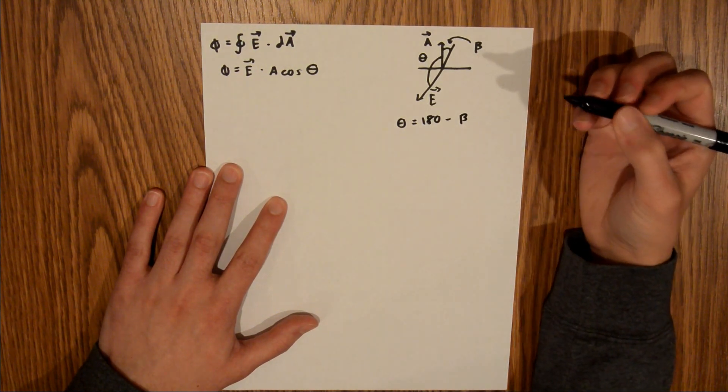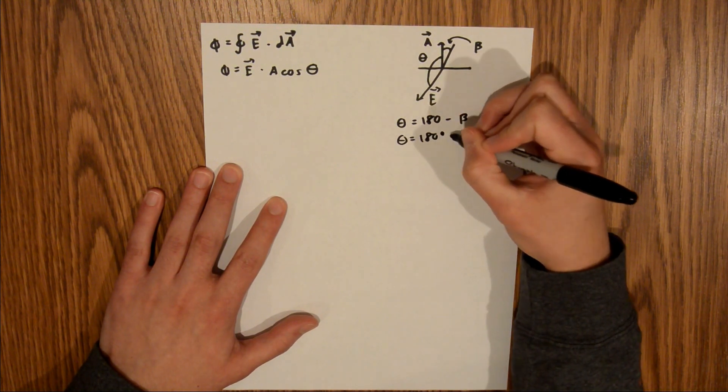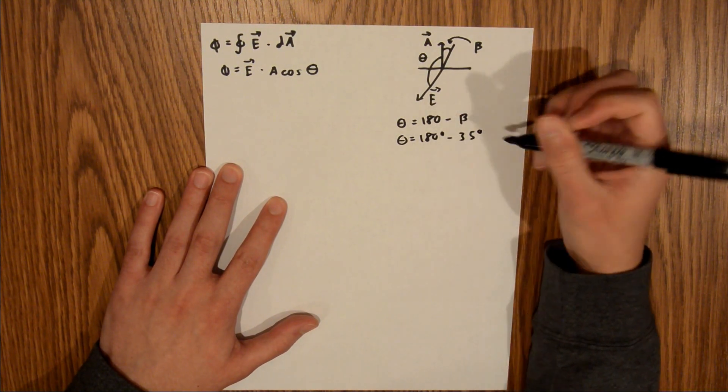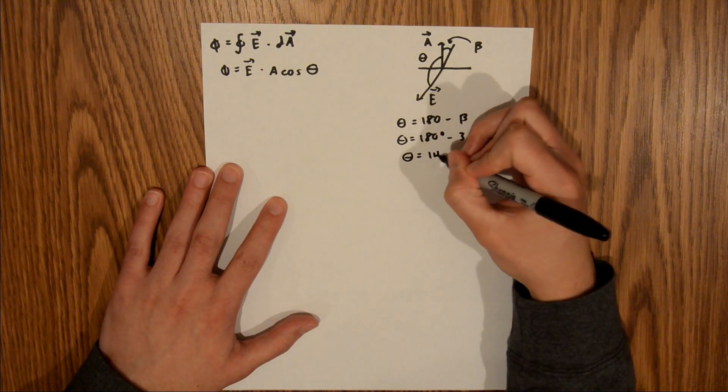In the problem we're told that beta is 35 degrees, so theta equals 180 degrees minus 35 degrees, which equals 145 degrees.